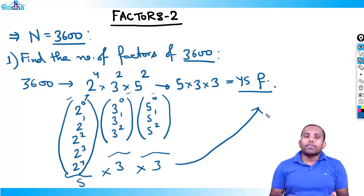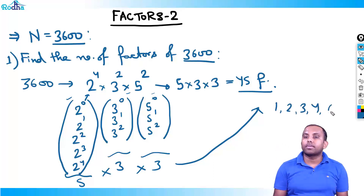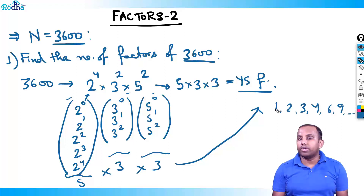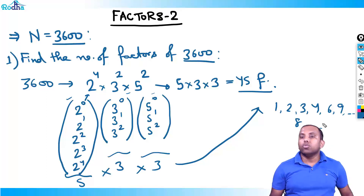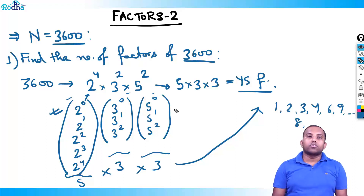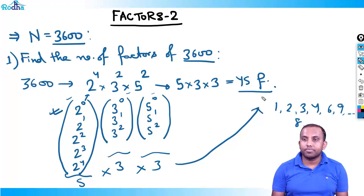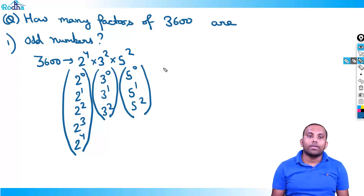Next question: how many factors of 3600 are even numbers? All 45 factors include both odd and even — like 1, 2, 3, 4, 6, and so on. But if I want only odd or only even factors, I need to limit the selection at the bracket level itself. The next question on this slide is: how many factors of 3600 are odd numbers?